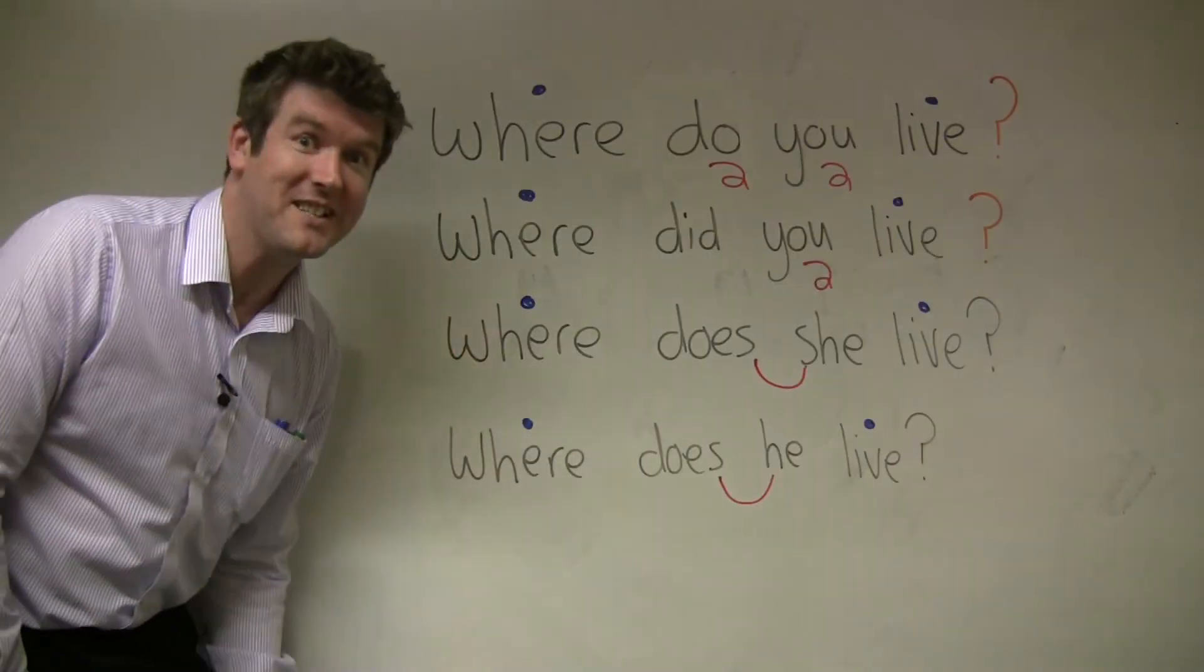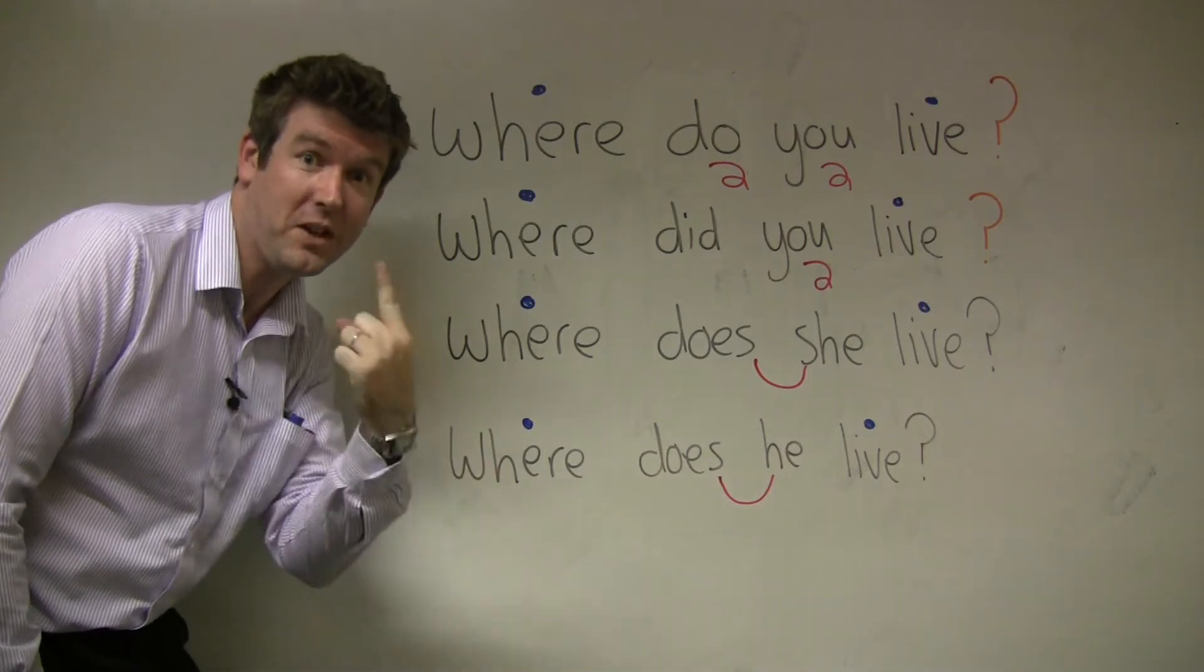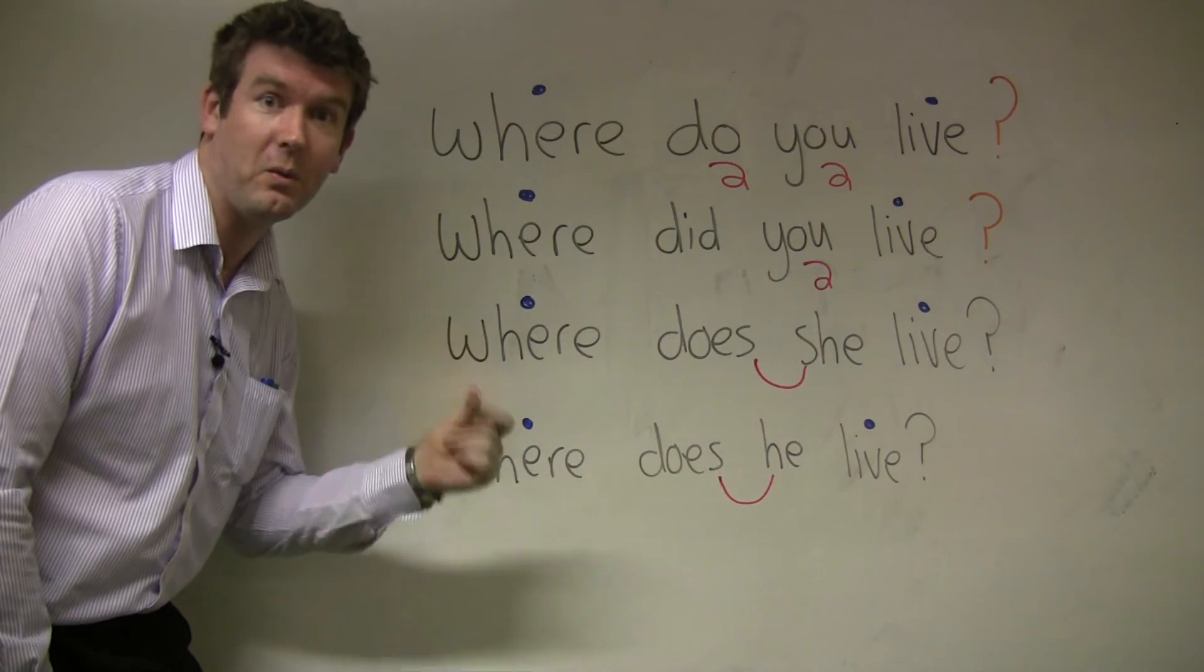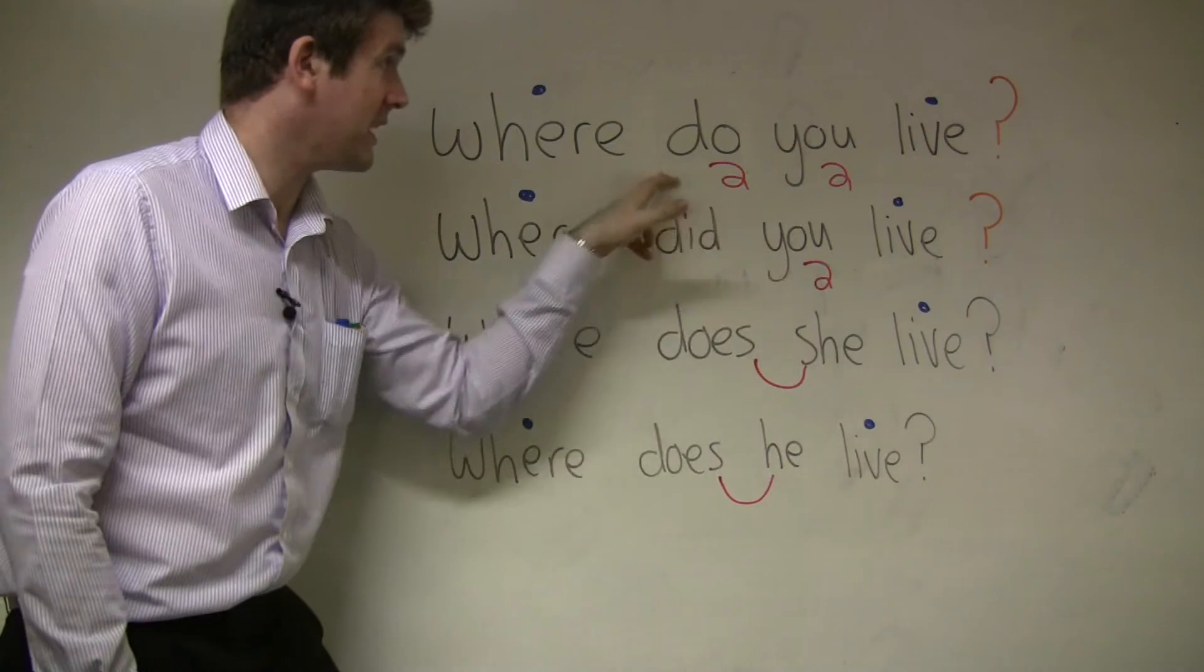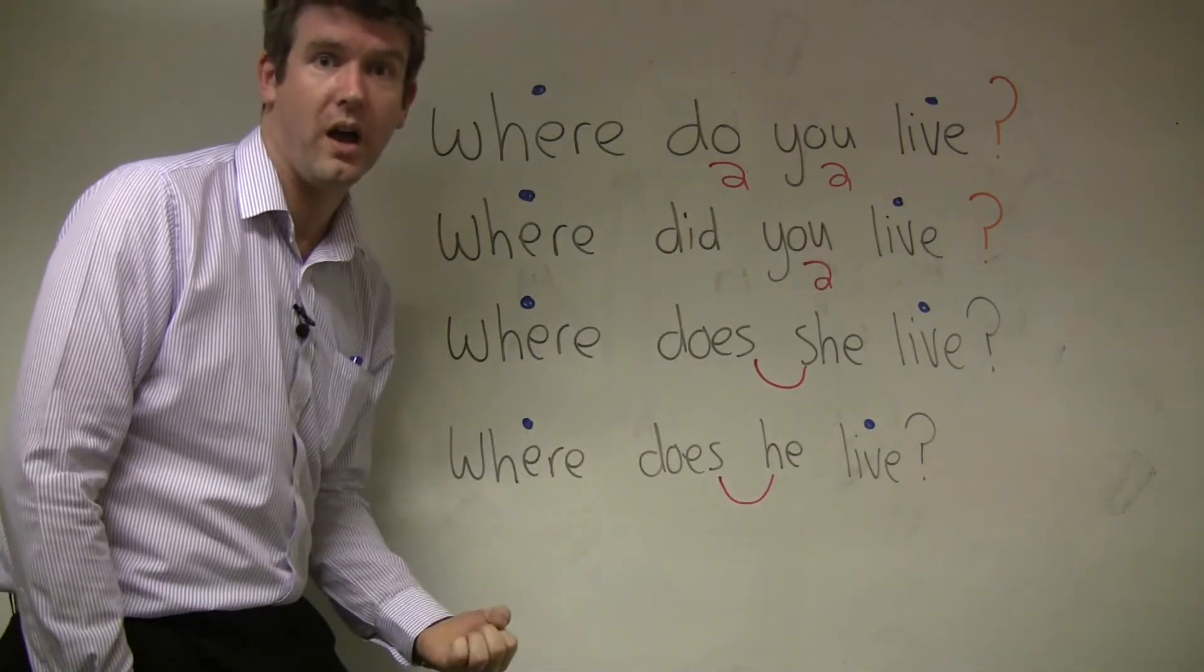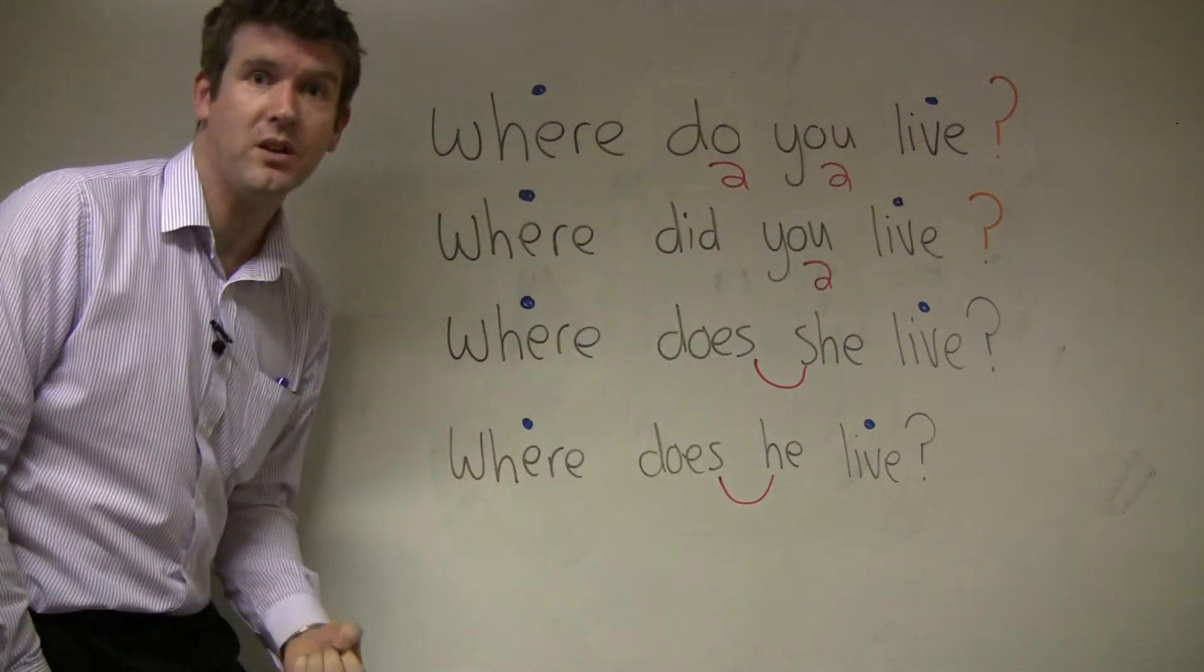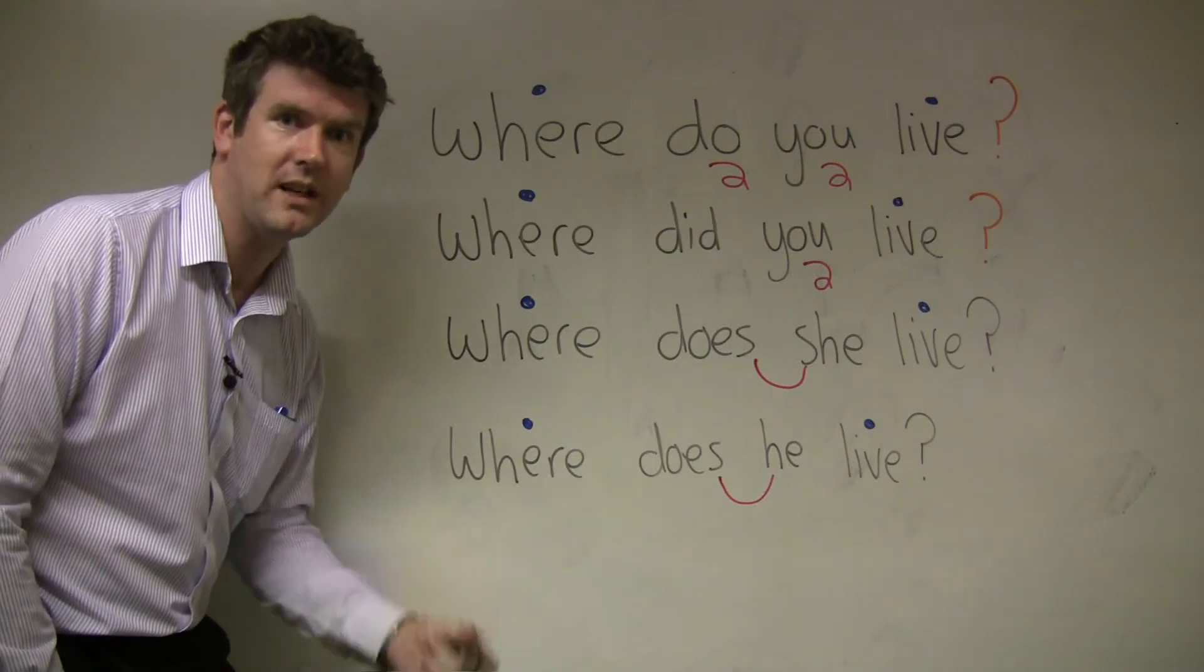Now there are two things you need to think about when using auxiliary verbs in questions. The first one is sentence stress. Where do you live? Where did you live? It's difficult to hear this. And we have what we call the schwa: a, a, a. Here it's easy to hear these words because they're important words. Where do you live? Where did you live?